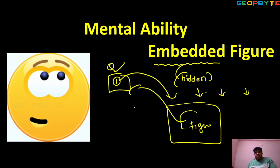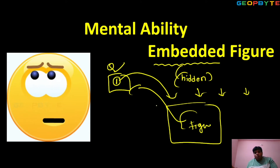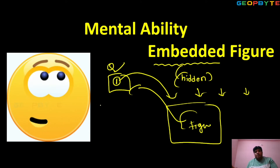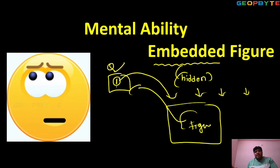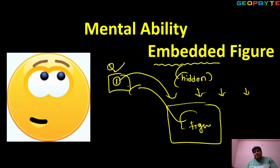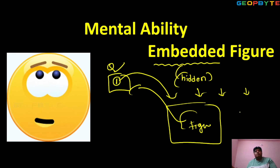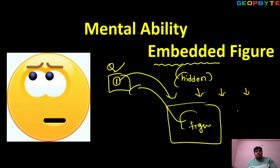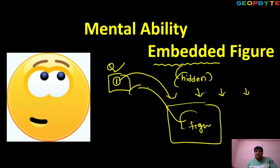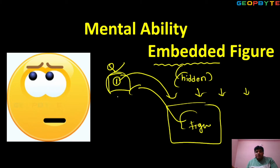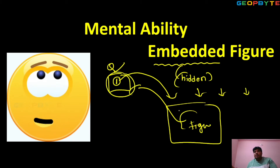Got it, children? One part is given. That part is existing in which diagram? Simply meaning — this part is where it is hidden. That is the question.